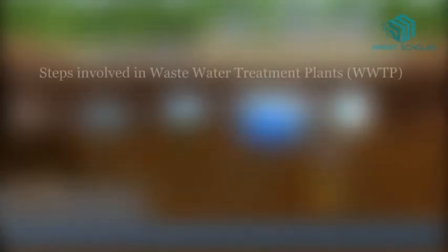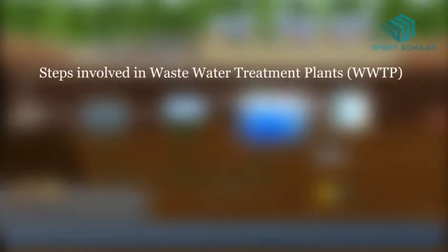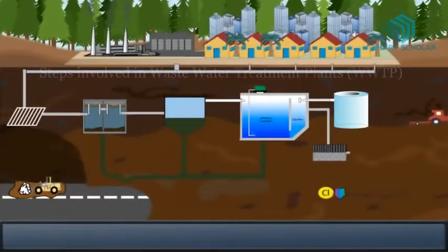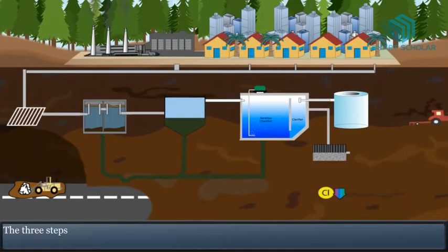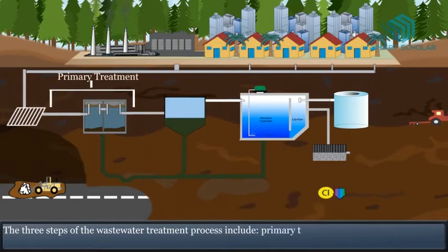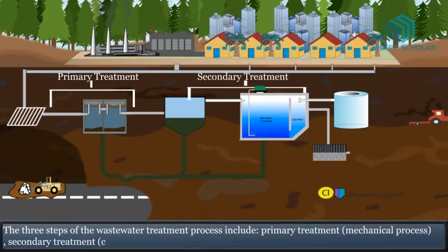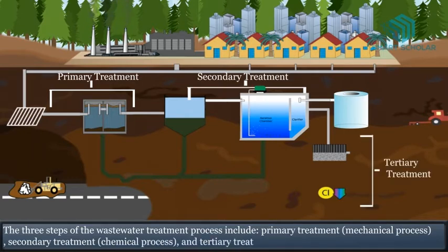Steps involved in wastewater treatment plant. The three steps of the wastewater treatment process include primary treatment, that's mechanical process; secondary treatment, that's the chemical process; and tertiary treatment, that's the biological process.